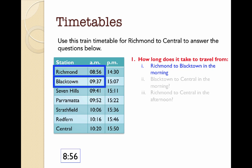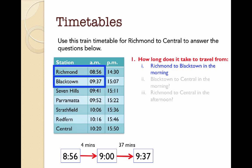Richmond starts at 8.56 and it takes until 9.37 to get there. What I'm going to do is see how many minutes there are until nine o'clock — that'll give me a nice round number to work with. So it's four minutes. From nine o'clock I can easily see that there are 37 minutes to 9.37. So if I add four and 37 together, that tells me how long it takes to get from Richmond to Blacktown in the morning.